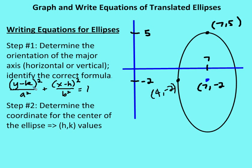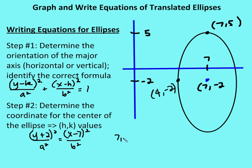I populate h and k by identifying the center, which is (7, −2). Since k is −2, the y term becomes y plus 2 squared. So the equation becomes: y plus 2 squared over a squared plus x minus 7 squared over b squared equals 1. Now I need to find the values for a squared and b squared.